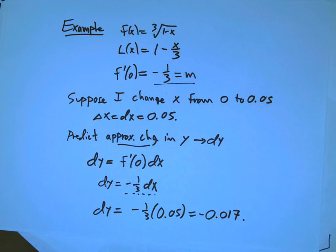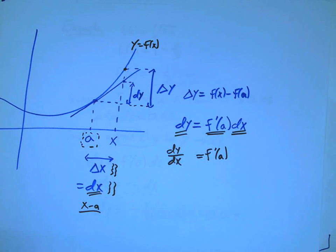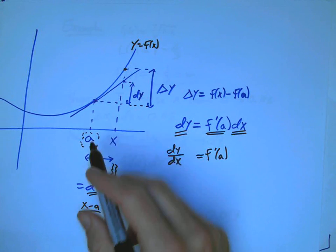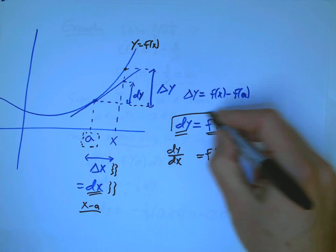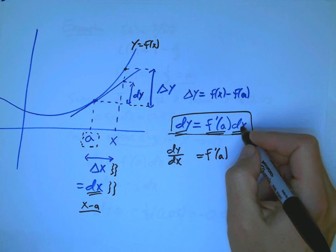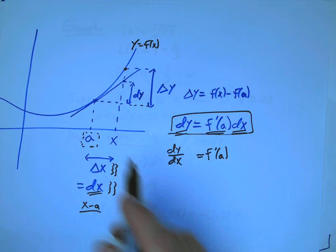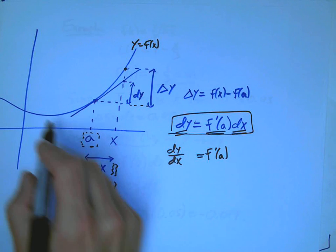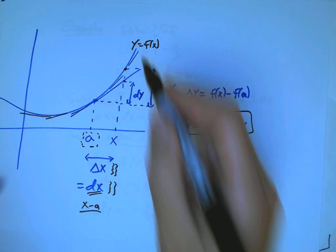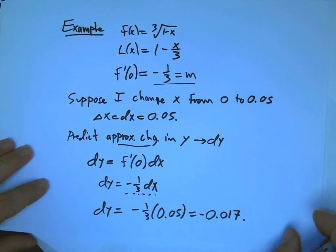I want to change the notation slightly in a very standard way. Previously we took the perspective that a was completely fixed — some special base point where we can easily evaluate the derivative. The notation used f prime of a as the slope, then multiplied by the small change in x to get the predicted approximate change in y, dy. But sometimes we want the more sophisticated perspective where we can do this at any point. So we promote a back to being a variable, and the usual name is x.